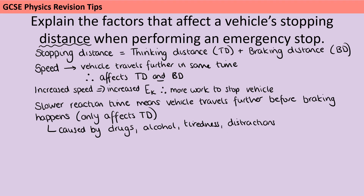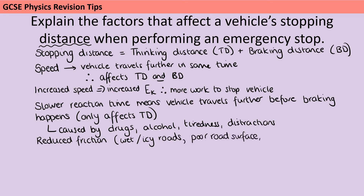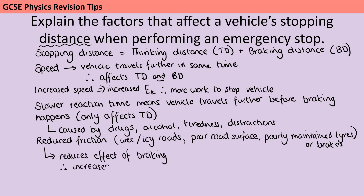Finally, we can think about things which are going to increase the braking distance but not the thinking distance. In order for you to brake, there needs to be friction — both between the brakes and the wheels and also between the tyres and the road. So anything that is going to reduce that friction is going to impact on the braking distance. In terms of the road, it could be because of the weather, but we want to be specific: wet or icy conditions. It's not enough to say the weather is bad — you need to specify how. It could also be a poor road surface, poorly maintained tyres, or poorly maintained brakes. Any one of those is going to reduce the effect of the braking and therefore lead to an increased braking distance.